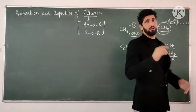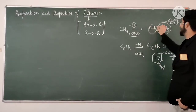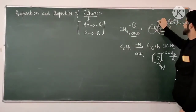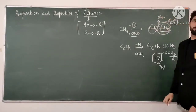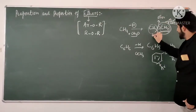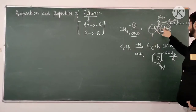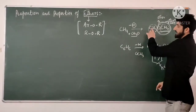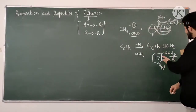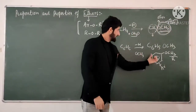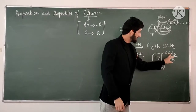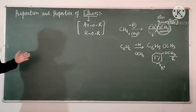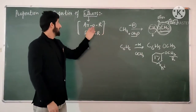Nomenclature is quite easy. If both groups are methyl, you have two methyls, so you can call it dimethyl ether. The IUPAC name: this group is methoxy, and what remains is CH3 — one carbon — so this is methoxymethane. The second compound is called methoxybenzene or anisole. Their nomenclature is quite easy.